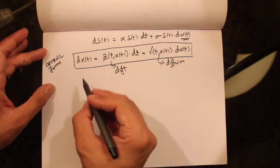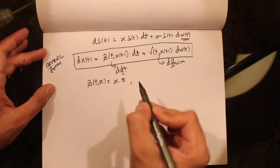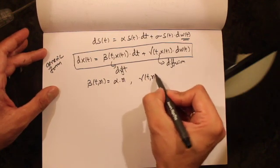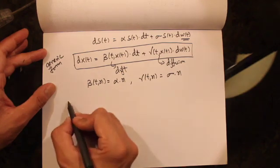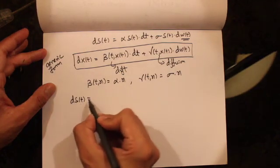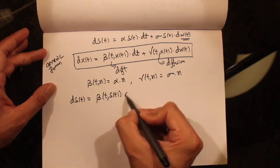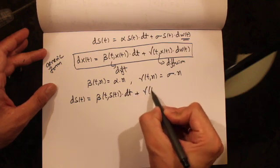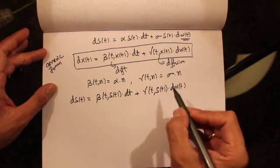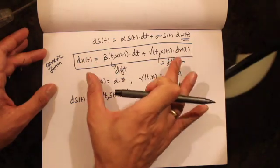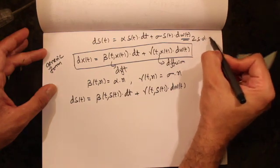Now if you compare these two equations: if we had β(t, x) = αx and γ(t, x) = σx, then this geometric Brownian motion can be written as dS(t) = β(t, S_t) dt + γ(t, S_t) dW_t. So it takes the same form as a generic stochastic differential equation, hence it is also a stochastic differential equation.